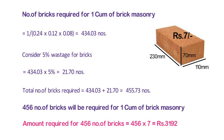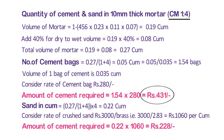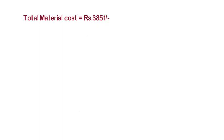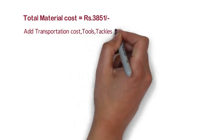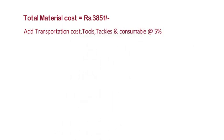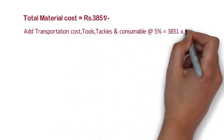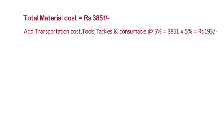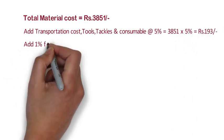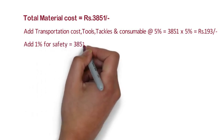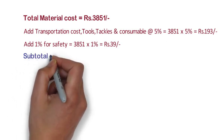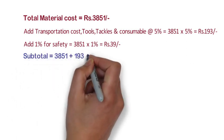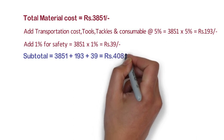So the total material cost is 3192 plus 431 plus 228 is equal to 3851 rupees. Now we have to add transportation cost, tools, tackles and consumables at 5% on material portion, that is 3851 x 5% is equal to 193 rupees. Add 1% for safety: 3851 x 1% is equal to 39 rupees. Now the subtotal is 3851 plus 193 plus 39 is equal to 4083 rupees.